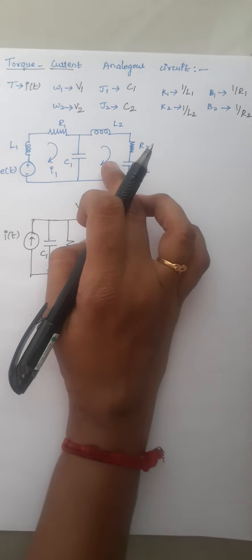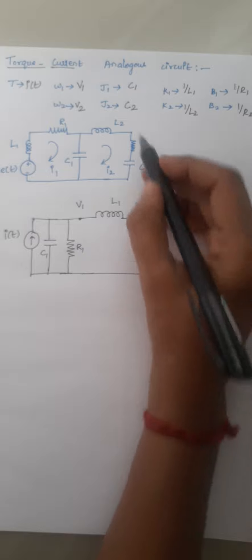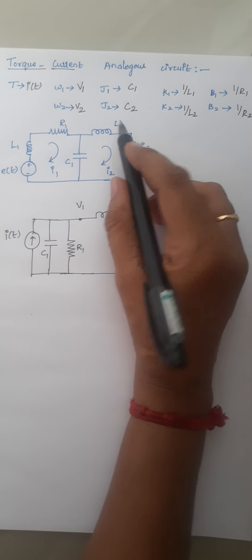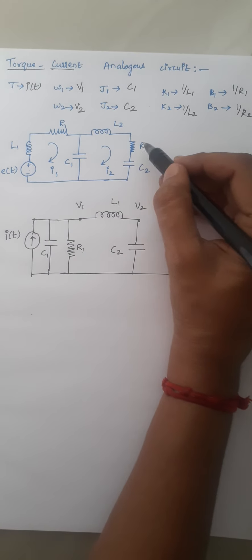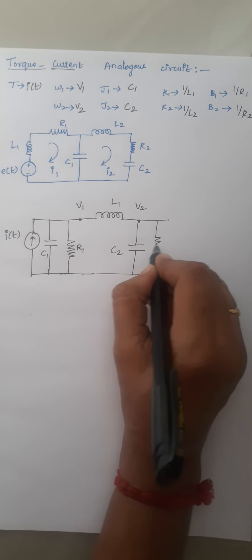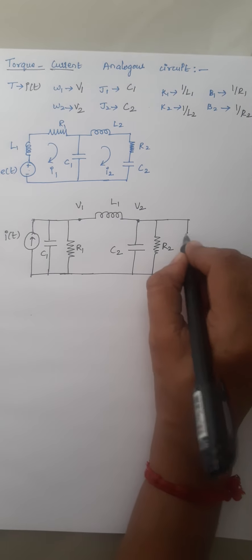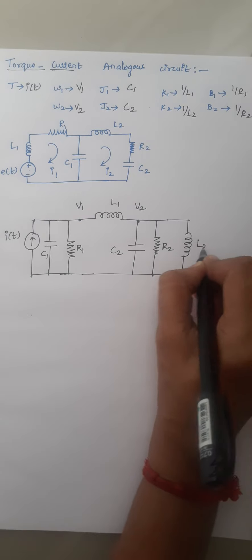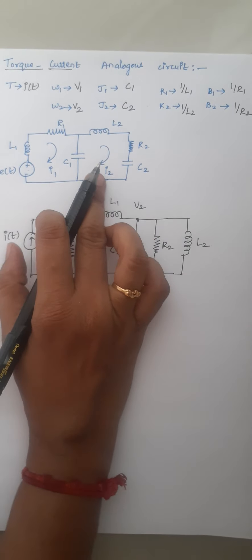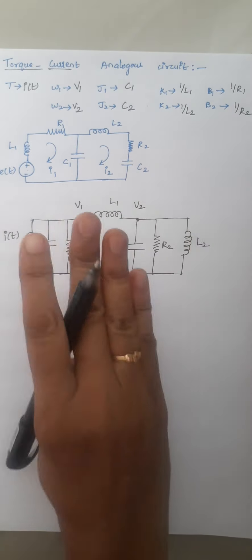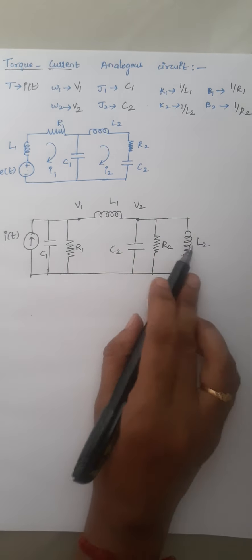For the second loop, L2 is replaced by capacitor C2, R2 remains as R2 in parallel with C2, and capacitor C2 in the series circuit is replaced by inductor L2. This is drawn at node 2. The second loop has 4 elements, so node 2 is also connected to 4 elements: C2, R2, L2, and L1.